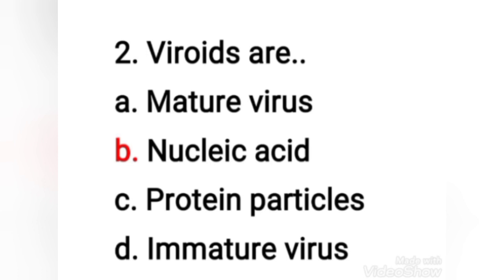Viroids are small single-stranded circular RNAs that are infectious pathogens. Unlike viruses, they have no protein coating. All known viroids are inhabitants of angiosperms, and most cause diseases whose economic importance to humans varies widely.